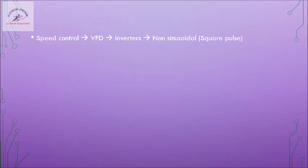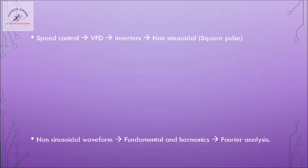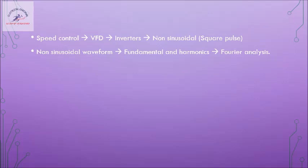We go for V/f control, and varying the frequency of a sinusoidal supply is possible only by rectifying it and then feeding it through an inverter. These inverters give us pulsed square waves — this is one of the techniques where we get square pulse waves, called pulse width modulation. The output of the inverter is a square wave which is not sinusoidal, so we are going to study the effect of feeding these square pulses or non-sinusoidal waveforms to the stator of the induction motor and how it affects performance.